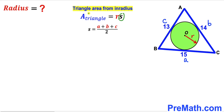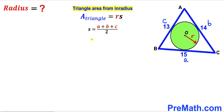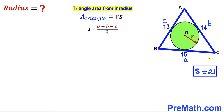Let's go ahead and calculate the value of lowercase s by substituting a = 15, b = 14, and c = 13 into the formula. So s = (15 + 14 + 13) / 2 = 42 / 2 = 21 units. Thus our s value turns out to be 21 units.